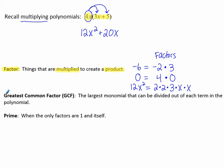Today we're going to focus on greatest common factors, or the GCF. That's the largest monomial that can be divided out of each term in the polynomial. Now, if I can't factor an expression, we call it prime — or rather, if we can only factor it into the numbers 1 and itself.